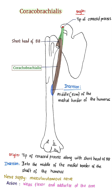Origin of coracobrachialis: it arises from the tip of the coracoid process of the scapula, along with the short head of biceps brachii.